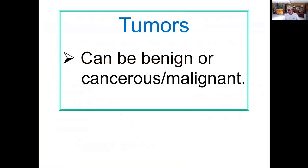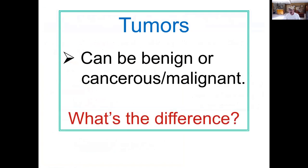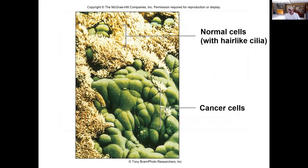When we talk about tumors, we often talk about benign or malignant tumors — malignant and cancerous are essentially the same thing. The easiest way to think of it is that a benign tumor tends to be a localized growth that can often be surgically removed and will not come back. A cancerous or malignant tumor, however, has the ability to spread, or metastasize.